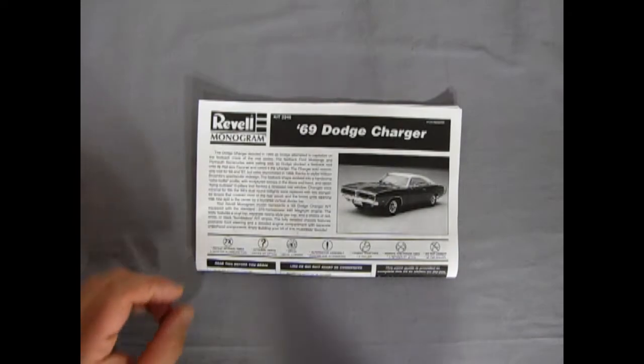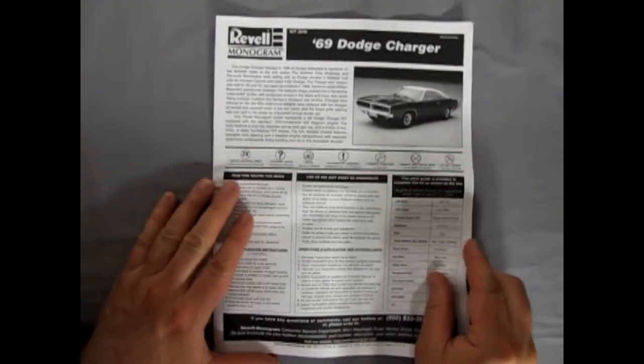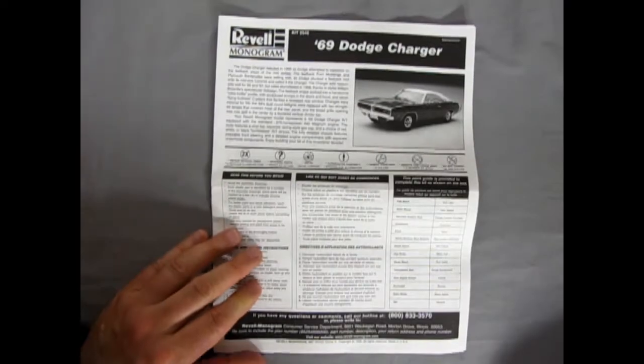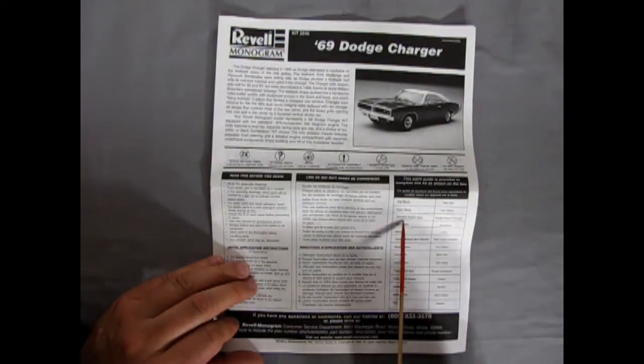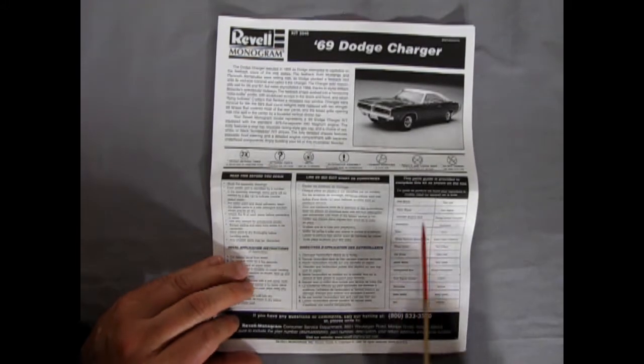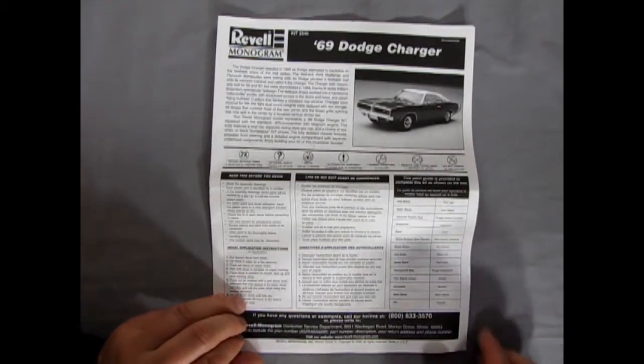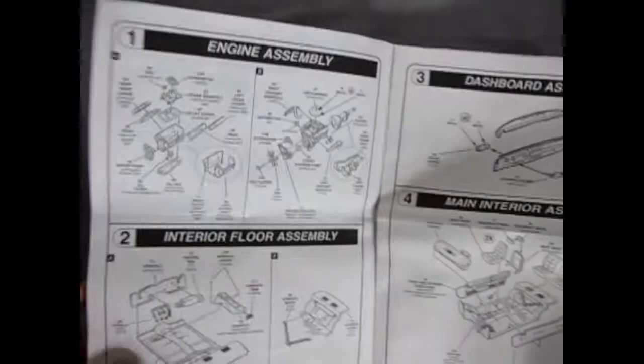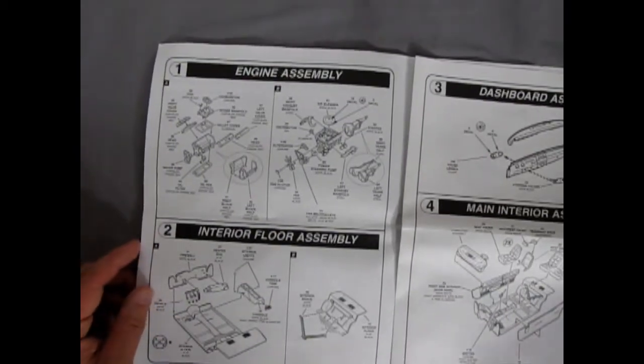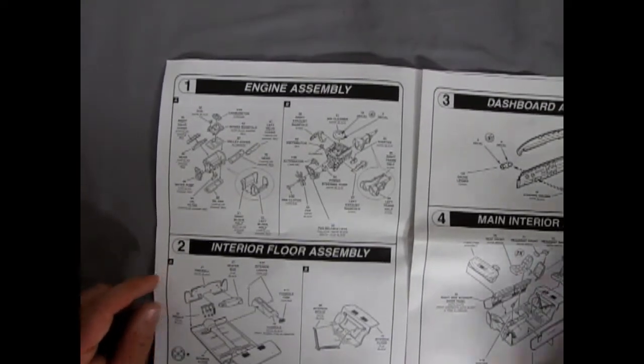And here we have our Dodge Charger instruction sheets. And it's one of those booklet affairs. It tells you all the colors to paint your car in. Oh it says Chrysler engine red here. Aha. So on the box lid there was a boo-boo. Okay so this just folds out again much like all the other instruction sheets. So let's just check this thing out panel by panel.